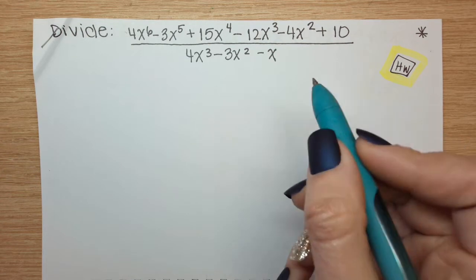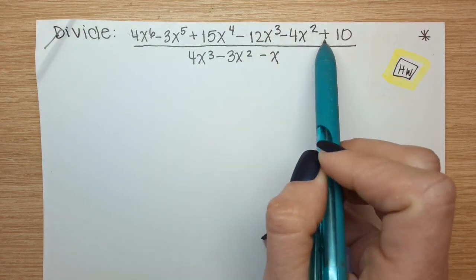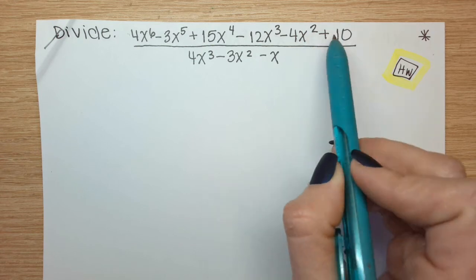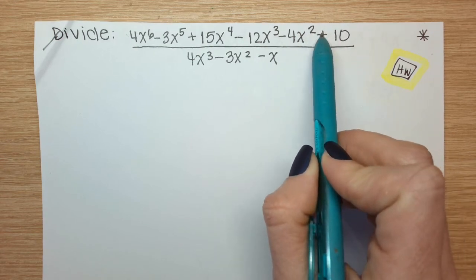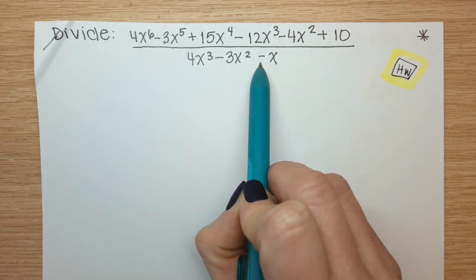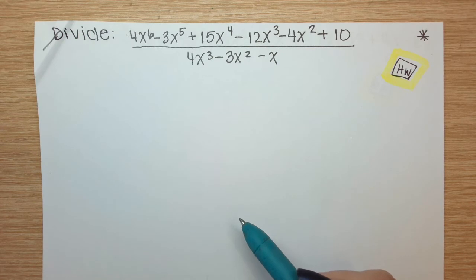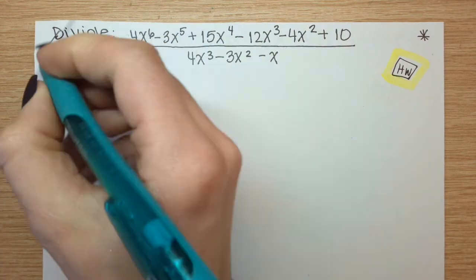In this video, we're going to go over the following example which actually requires placeholders in both the numerator or dividend and the denominator or divisor. So let me show you what that looks like when it's all set up. That's my divisor.